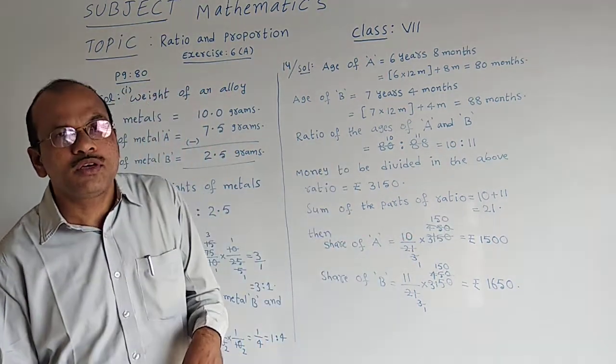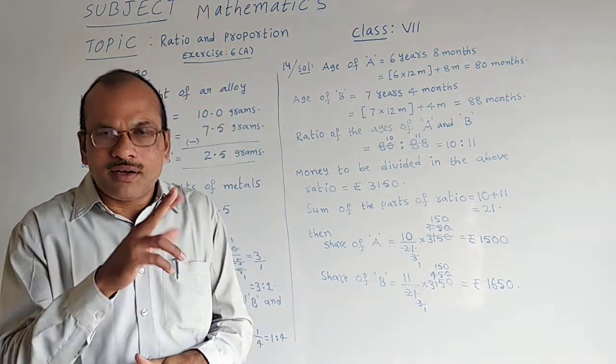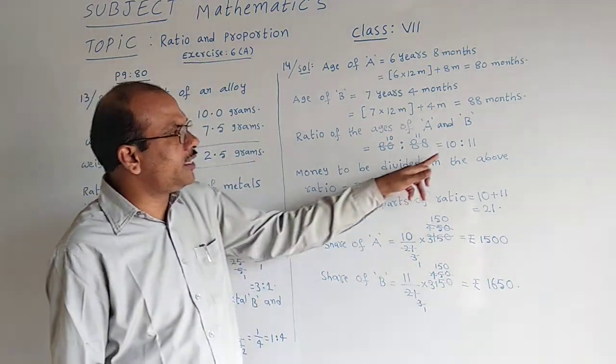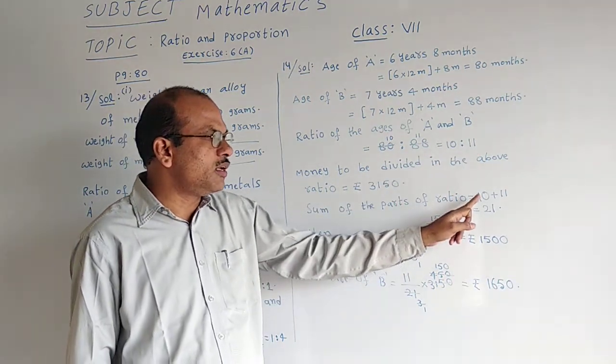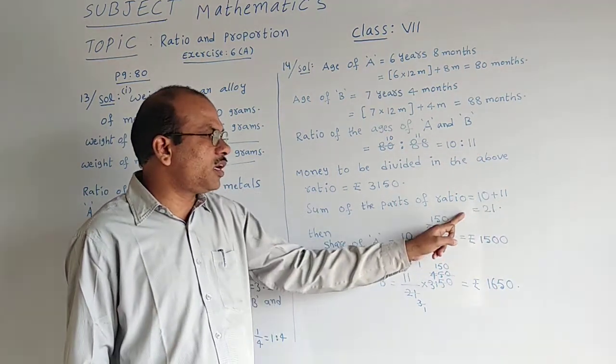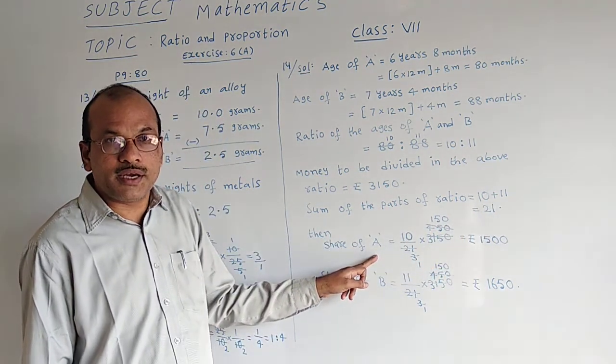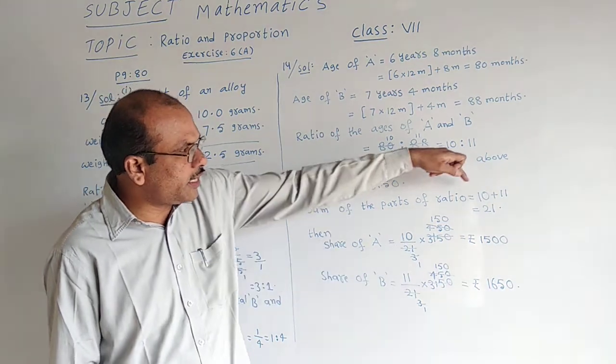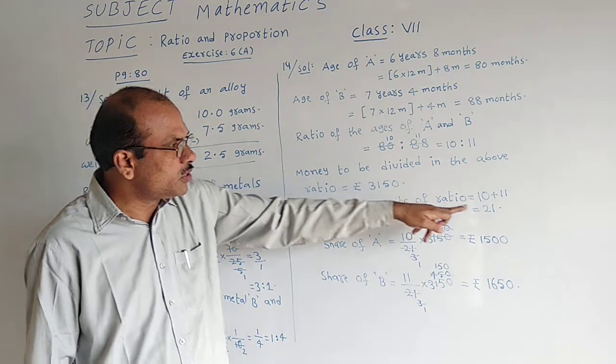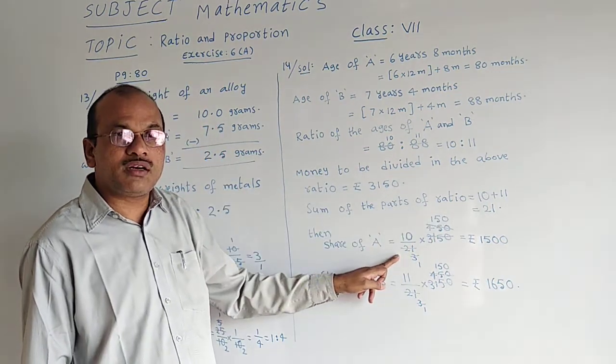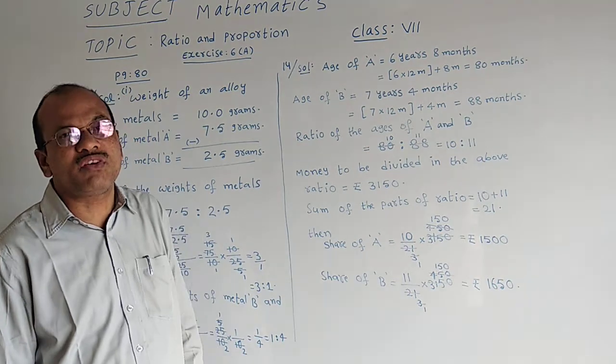That sum of the parts of the ratio - whenever money is to be divided, we need to find sum of the parts of the ratio. Already 10 is to 11 we got. Sum of the parts: 10 plus 11 equals 21. Then share of the first person A is equal to 10 by total parts 21 into the total money 3,150 rupees.